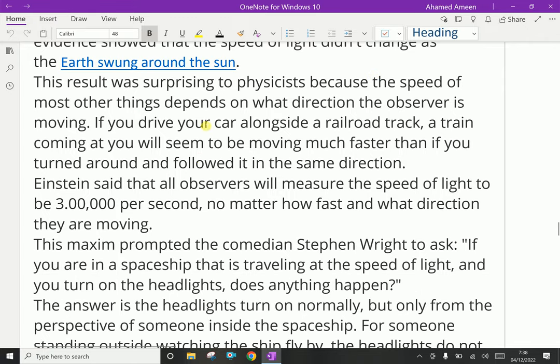This result was surprising to physics because the speed of most other things depends on what direction the observer is moving. If you're on a vehicle and another vehicle is moving in the same direction, it seems that the other vehicle is not moving or slow enough. But if another vehicle is coming opposite, that opposite vehicle seems very faster because it's a different direction. But it is not simple for light speed, because even if the source is moving or not, that light speed is constant.